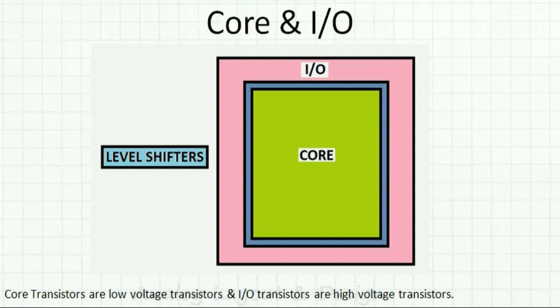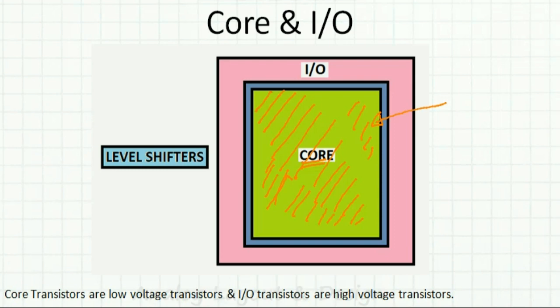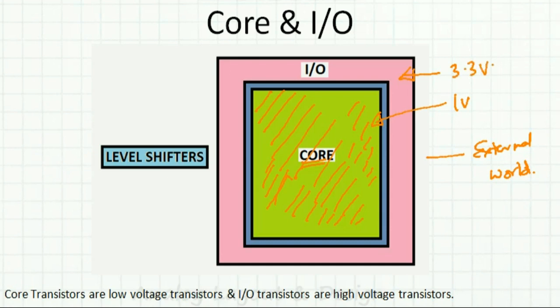The solution is to identify all computation and run it at a lower voltage called the core voltage. All the digital logic — which switches fast — operates at 1V. The noise exists in the external world outside the IC, not internally. So only at the IO interface, where we deal with the external world, we use a higher voltage like 3.3V.